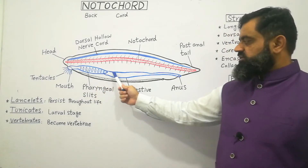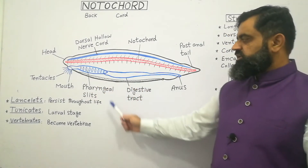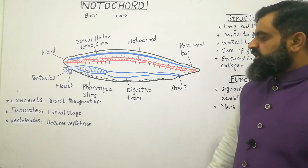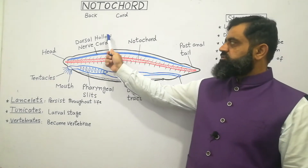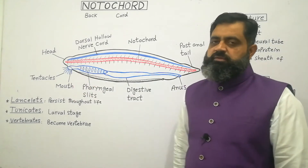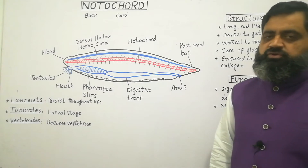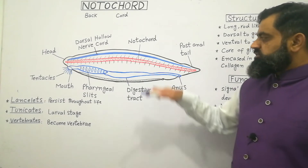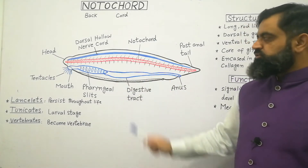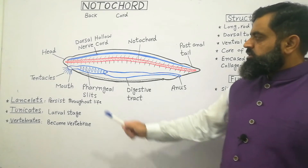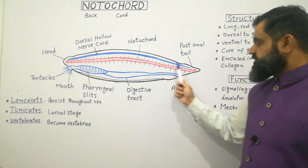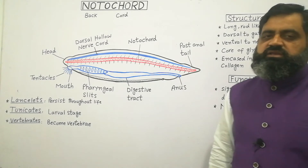Just behind the mouth there is a digestive tract — the digestive system, also known as the gut — which contains pharyngeal slits and ends at the posterior end. On the dorsal side there is a dorsal hollow nervous system, present on the dorsal side of the animal, just like a spinal cord. The anterior side acts as a brain while the posterior acts as a spinal cord. In between the digestive system and nervous system, there is a rod-like structure known as notochord, shown in red in the diagram, which extends from the anterior to the posterior side — head to tail — and acts as the central axis of the body.